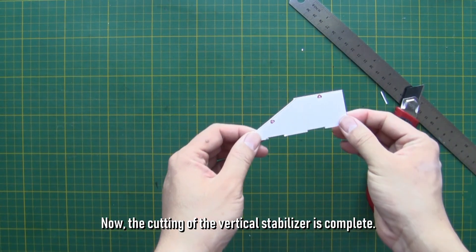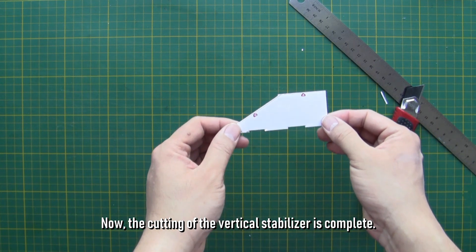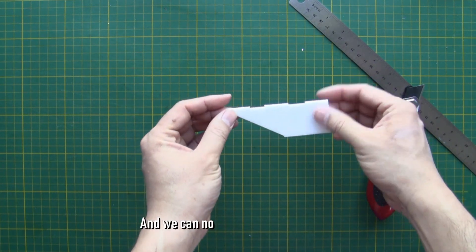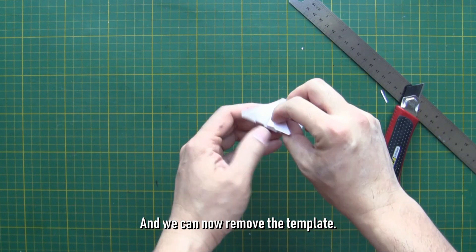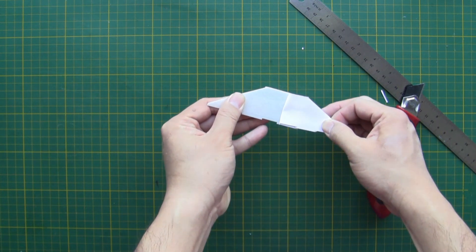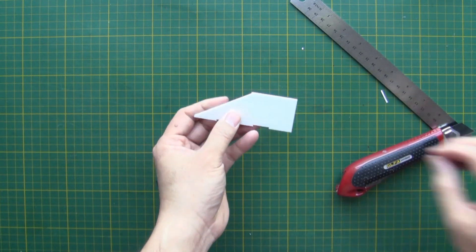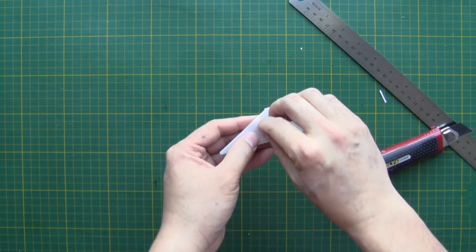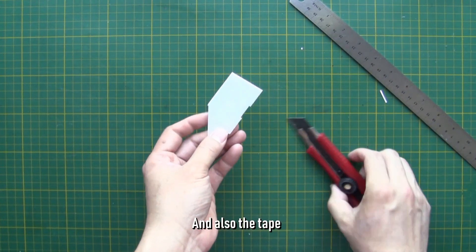Now, the cutting of the vertical stabilizer is complete. And we can now remove the template and also the tape.